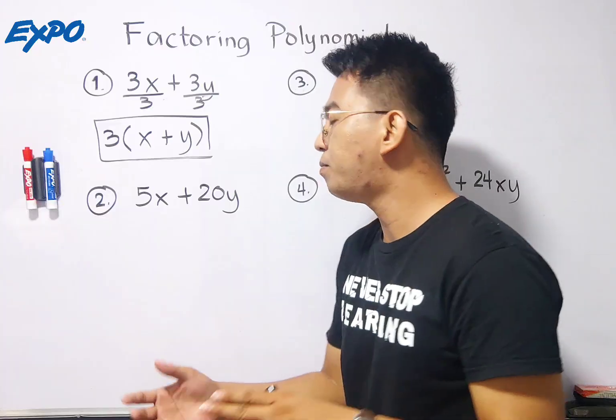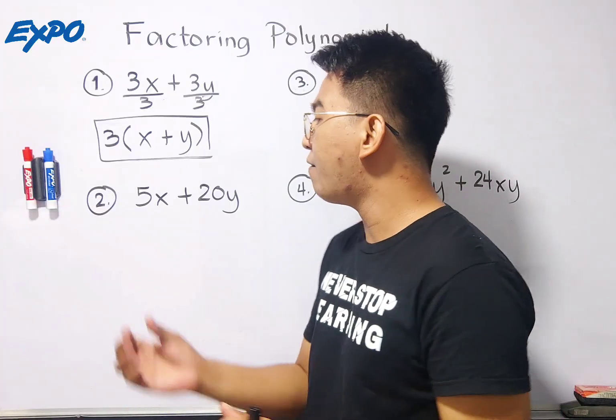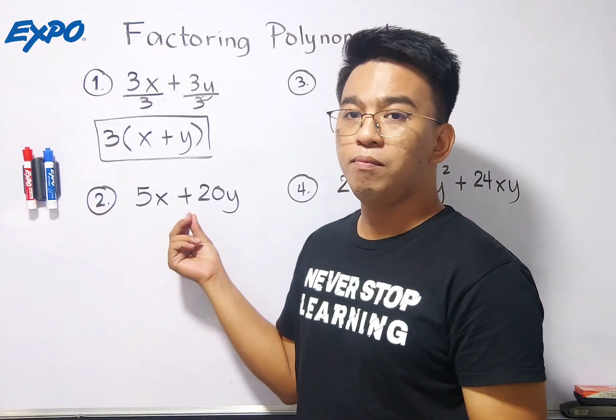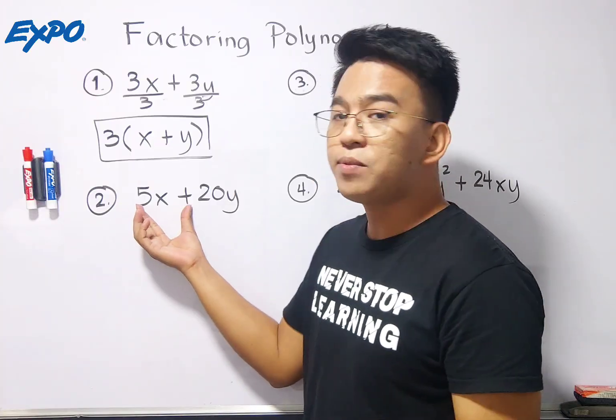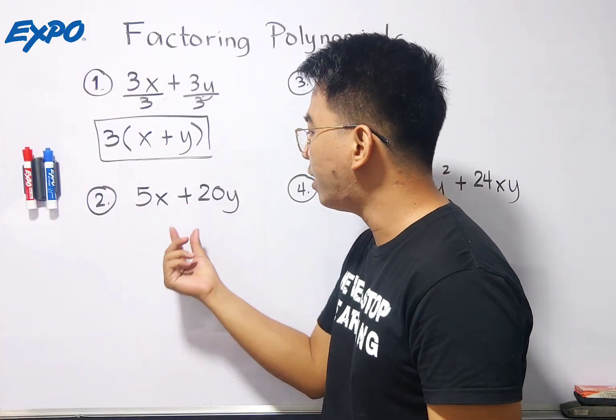Meaning guys, the factor of 3x plus 3y is simply 3 times x plus y. Okay, that's it for item number 1. Now let's move on with item number 2. In number 2, we have 5x plus 20y. Now,